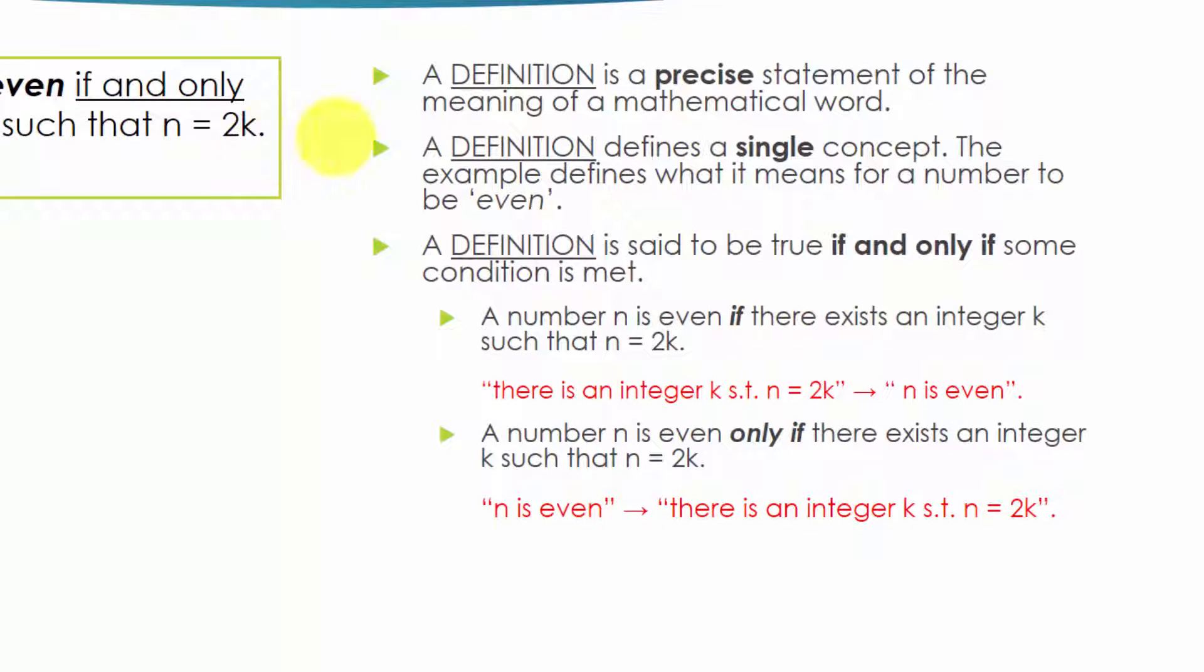So this definition is about what it means for a number n to be even. It is a precise statement of the meaning of the mathematical word even. So the first point you should take is that a definition is precise.